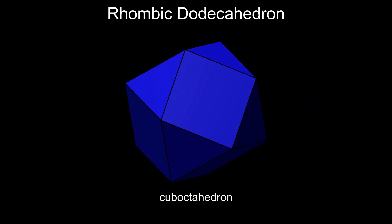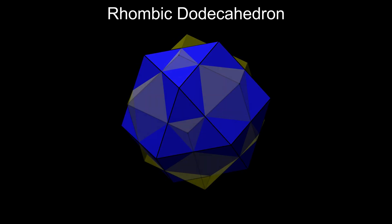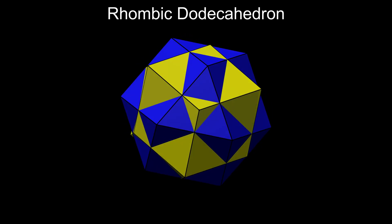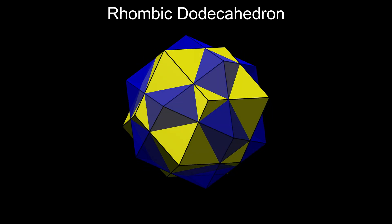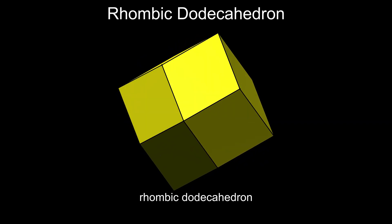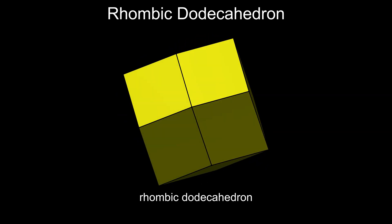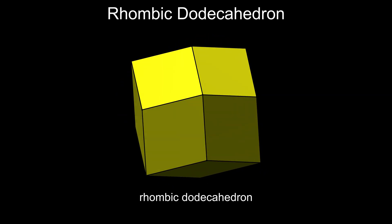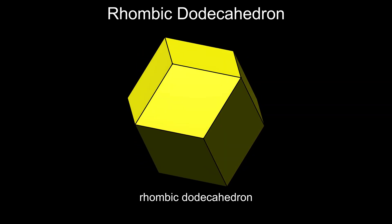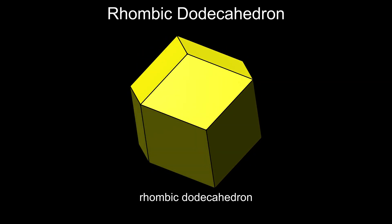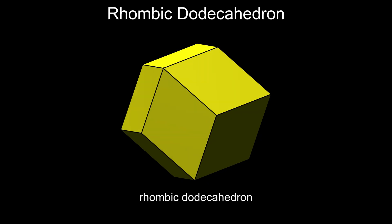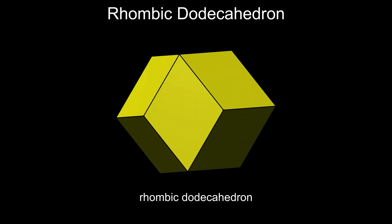It is in fact a Catalan solid — the dual of the cuboctahedron, an Archimedean solid — so it has identical faces and makes a fair die, which could be used as a D12 instead of the more common regular dodecahedron. It's one of only two Catalan solids with identical edges.